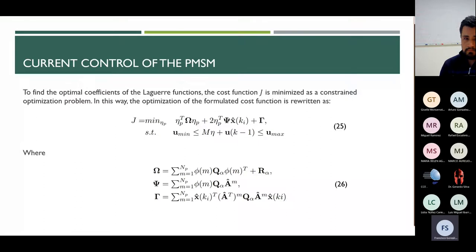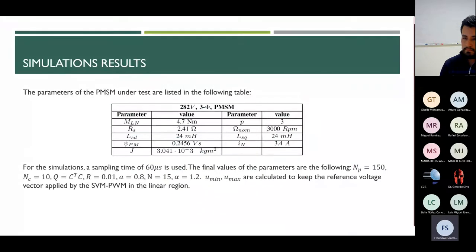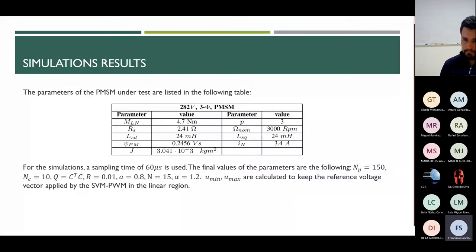This solution leads to the optimal control trajectory for following the current reference. However, by the principle of receding horizon control, only the first element of the optimal trajectory is applied to the PMSM. The parameters of the PMSM under test are listed in the following table. For the simulation, a sampling time of 5 microseconds is used. The prediction horizon is set to 150, the control horizon is 10, the R matrix is 0.01, the set of Laguerre functions is 15, and the exponential factor alpha is 1.2.